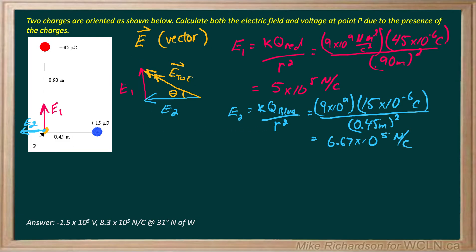So to get my total electric field it's just Pythagoras. So it'll be E1 squared plus E2 squared all square rooted. So 5 times 10 to the fifth squared plus 6.67 times 10 to the fifth squared, all square rooted gives me my answer. I'll end up with 8.3 times 10 to the fifth newtons per coulomb.